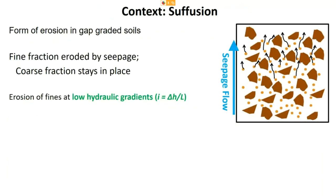To give more context of a typical engineering application: suffusion is a form of erosion occurring in gap-graded soils. As shown in the cartoon on the right, these soils have big particles, small particles, and a missing set of intermediate-diameter particles. When water flows through such a soil, the fine particles can be eroded while the coarse particles stay in place or collapse, having lost the support the fines were providing. This erosion can initiate at low hydraulic gradients — much lower than predicted for uniformly graded soils.